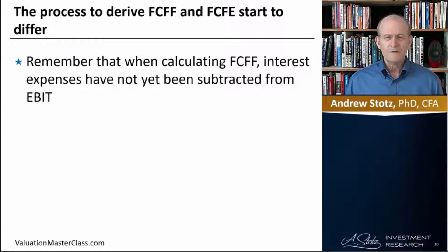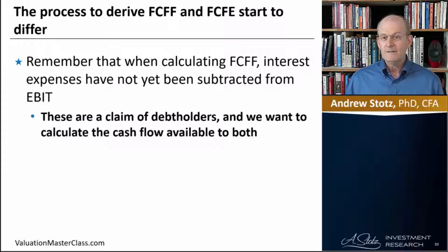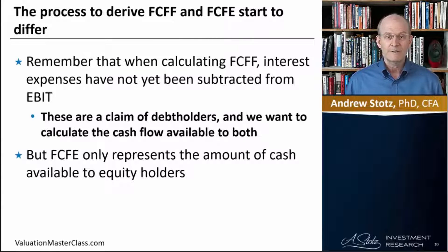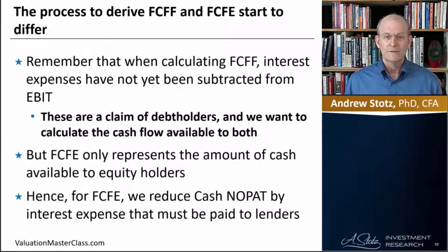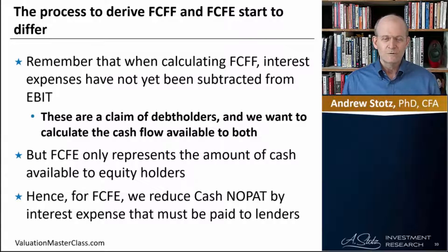When calculating free cash flow to firm, interest expenses have not yet been subtracted from EBIT. These are a claim to debt holders and we want to calculate the cash flow available to both. But free cash flow to equity only represents the amount of cash available to equity holders. Hence, for free cash flow to equity, we reduce the cash NOPAT by interest that must be paid to lenders first before it could be available to equity holders.